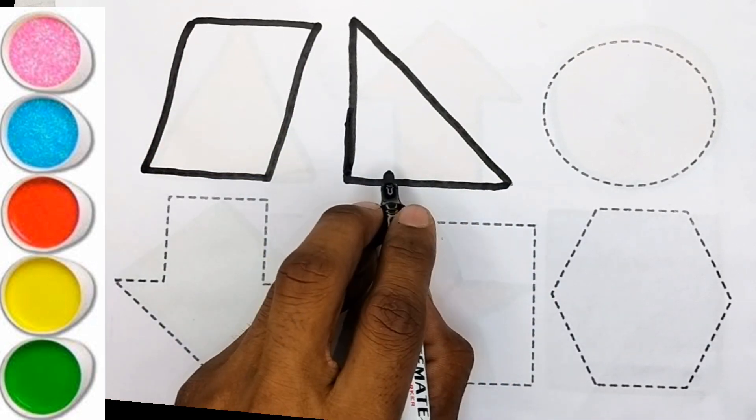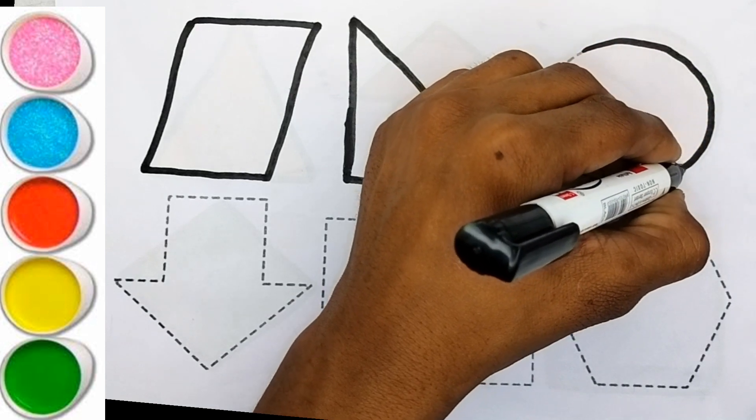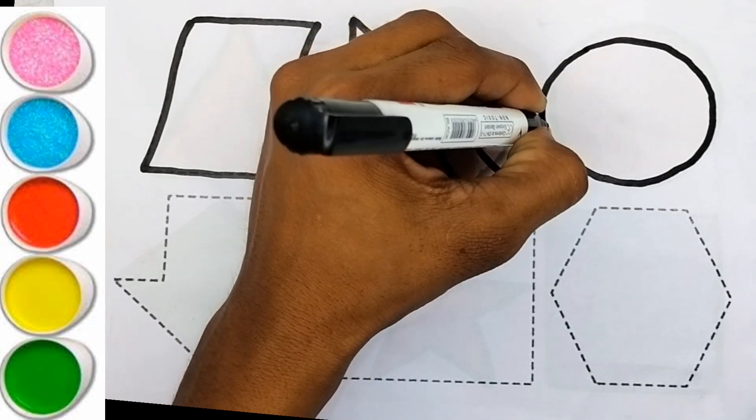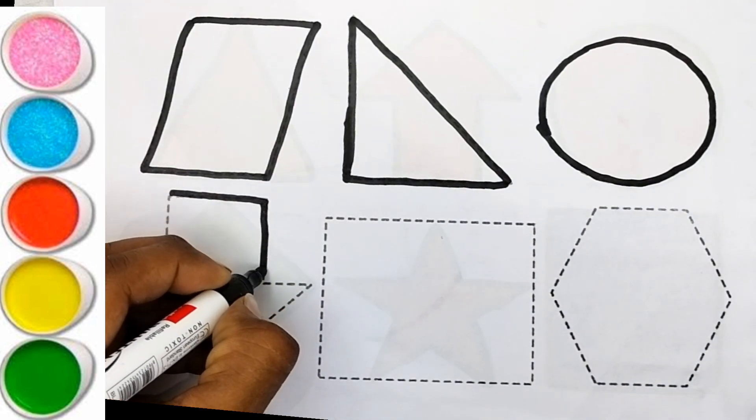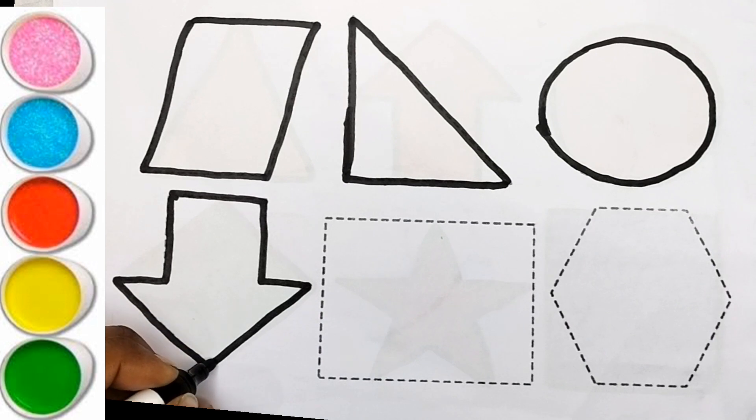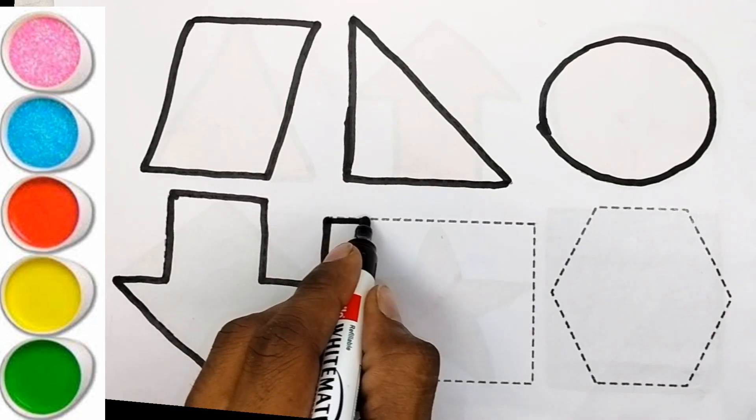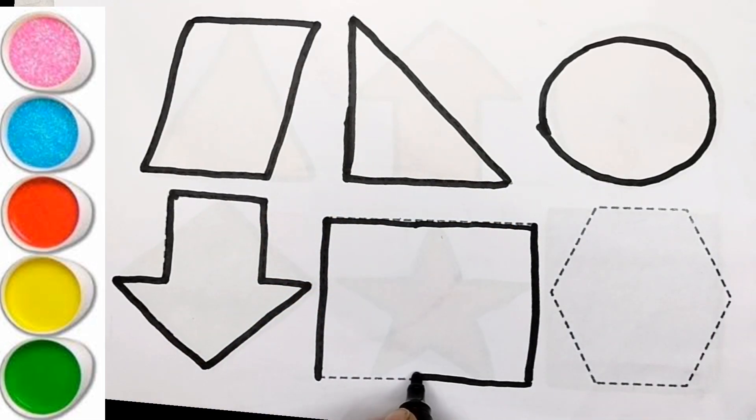Parallelogram, right triangle, circle, down arrow, rectangle.